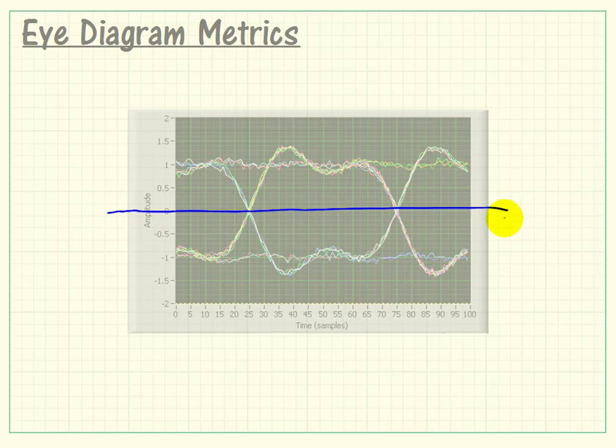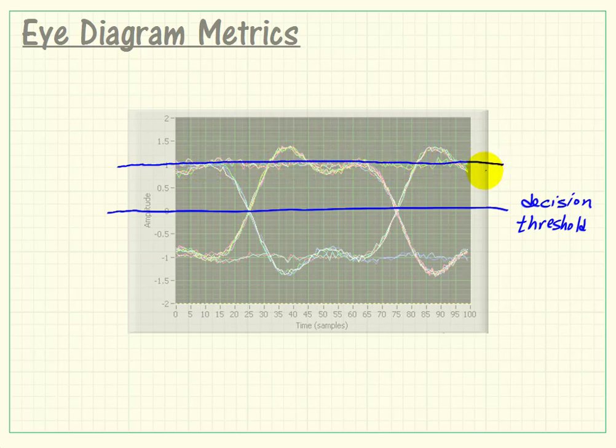Well, I'm going to go ahead now and define a number of things based on our decision threshold. And this maximum value of 1, maximum amplitude.